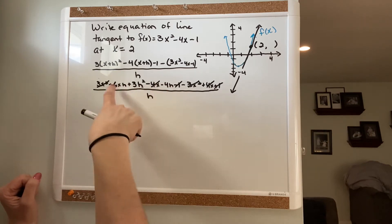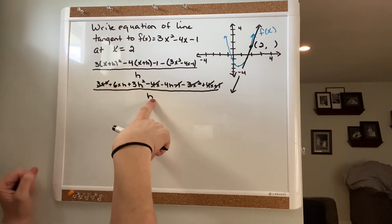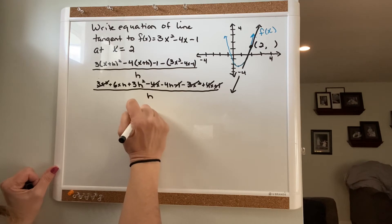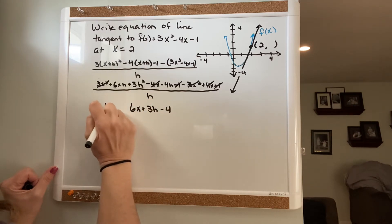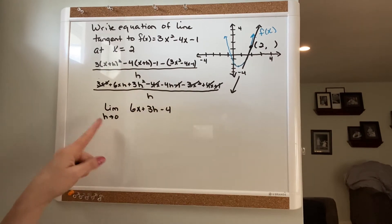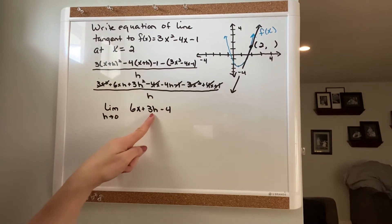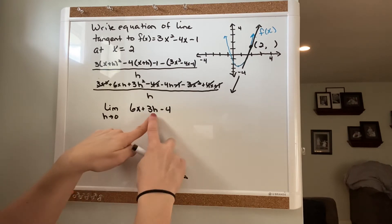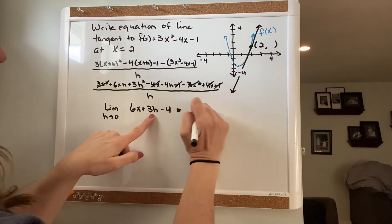If you factor an h out of the numerator, the h that you factor out of the numerator will cancel with this one, and your first derivative will be 6x plus 3h minus 4. And I asked you guys to take the limit as h approaches zero, so at this point you can do direct substitution. If h is zero, you are left with 6x minus 4.